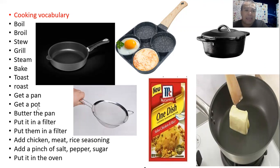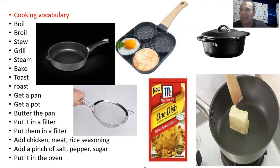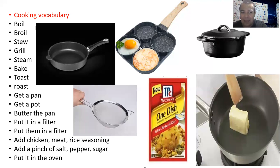Next one, get a pot. A pot is the other one that we use, which is this one right here — we can cook rice, we can also cook some soups and other types of food. So this is the pan, and this is the pot.